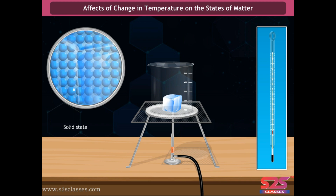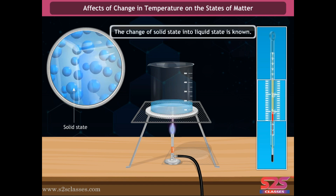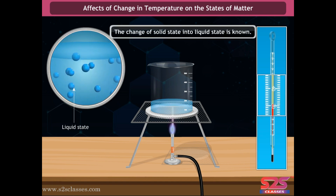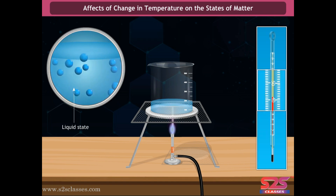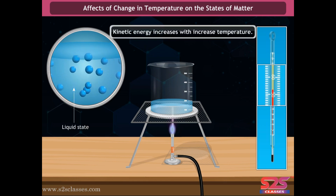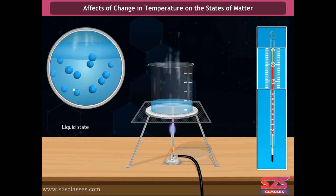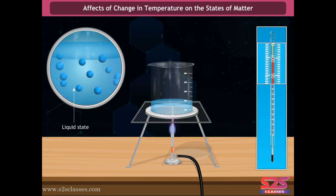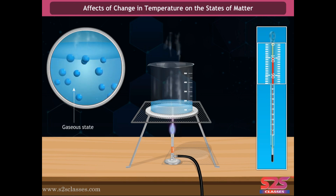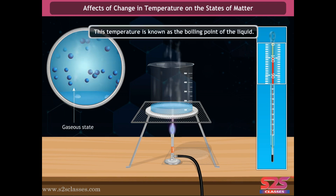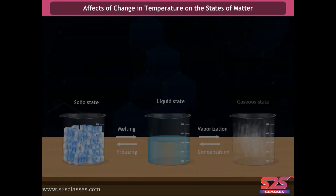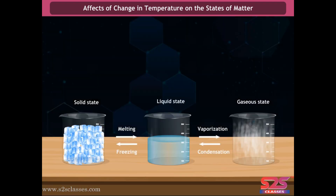The particles soon leave their positions and start moving freely — consequently the substance melts. The change of solid state into liquid state is known as fusion. If heating is continued, the kinetic energy of liquid particles increases further, increasing particle velocity, and at a certain temperature they obtain enough energy to break free from the force of attraction. At this point the liquid starts boiling and changing into its gaseous state — this temperature is known as the boiling point. On decreasing temperature, gas changes into liquid and then into solid.